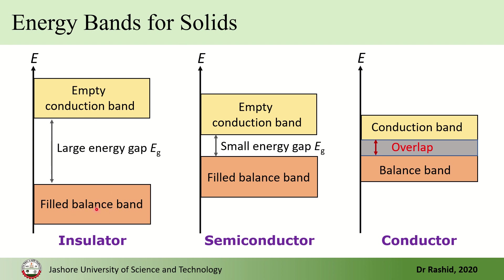So no carrier can jump from the valence band to the conduction band. In a conductor, there is an overlap between these two bands, so the carriers in this overlap region are free to move within the material. But for the case of a semiconductor, there is a small gap.